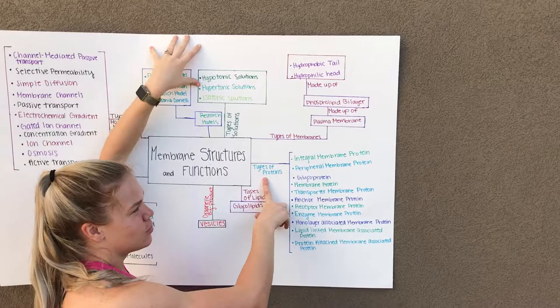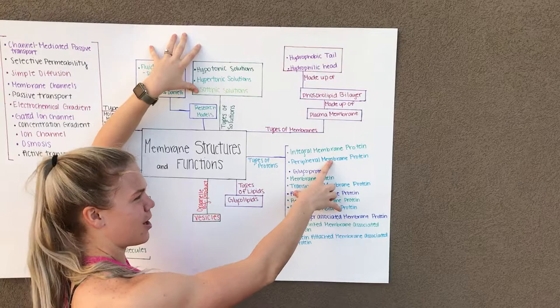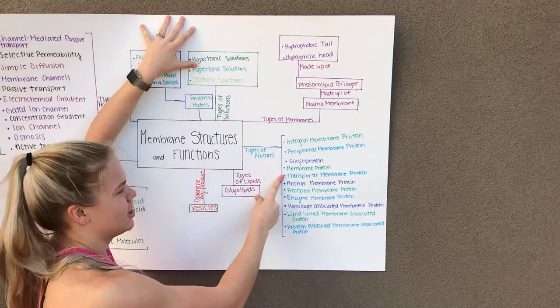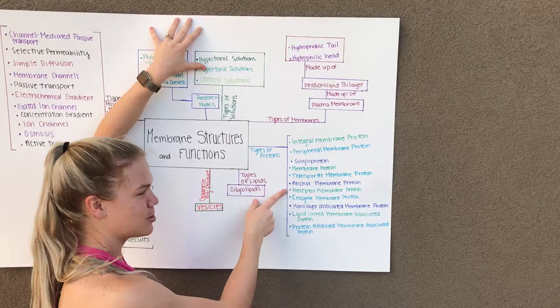And then we have our types of proteins which is your integral membrane protein, your peripheral membrane protein, your glycoprotein, your membrane protein, your transporter membrane protein, your anchor membrane protein, your receptor membrane protein,